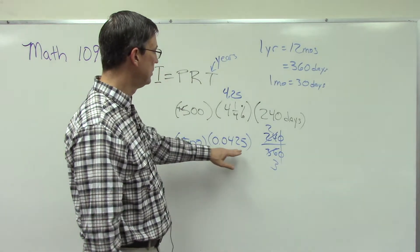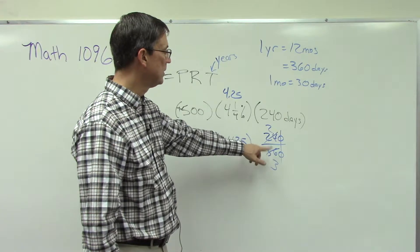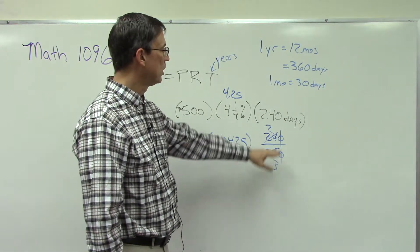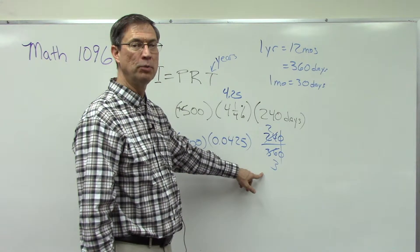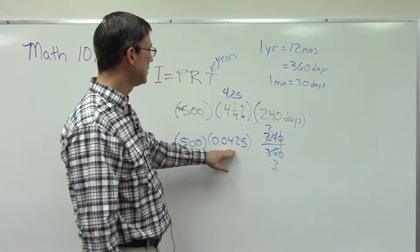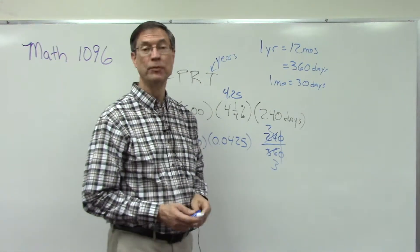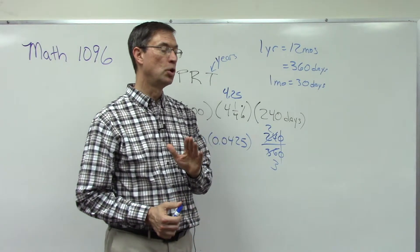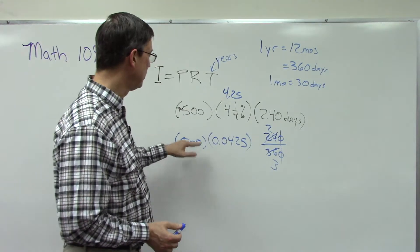Once we have all that, use your calculator: multiply 500 times 0.0425 times 2, then hit equals, and divide by 3. Or you can do 2 divided by 3 first — your calculator will give you 0.6666... — then multiply that by 0.0425 and by 500. Either way gives you the interest.